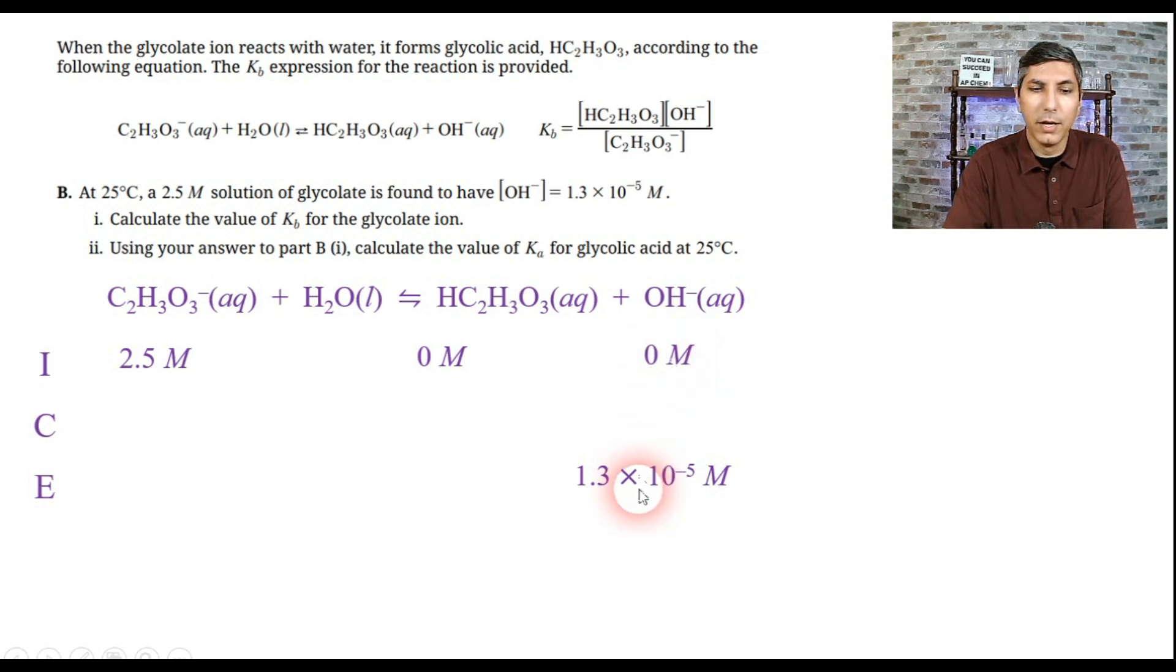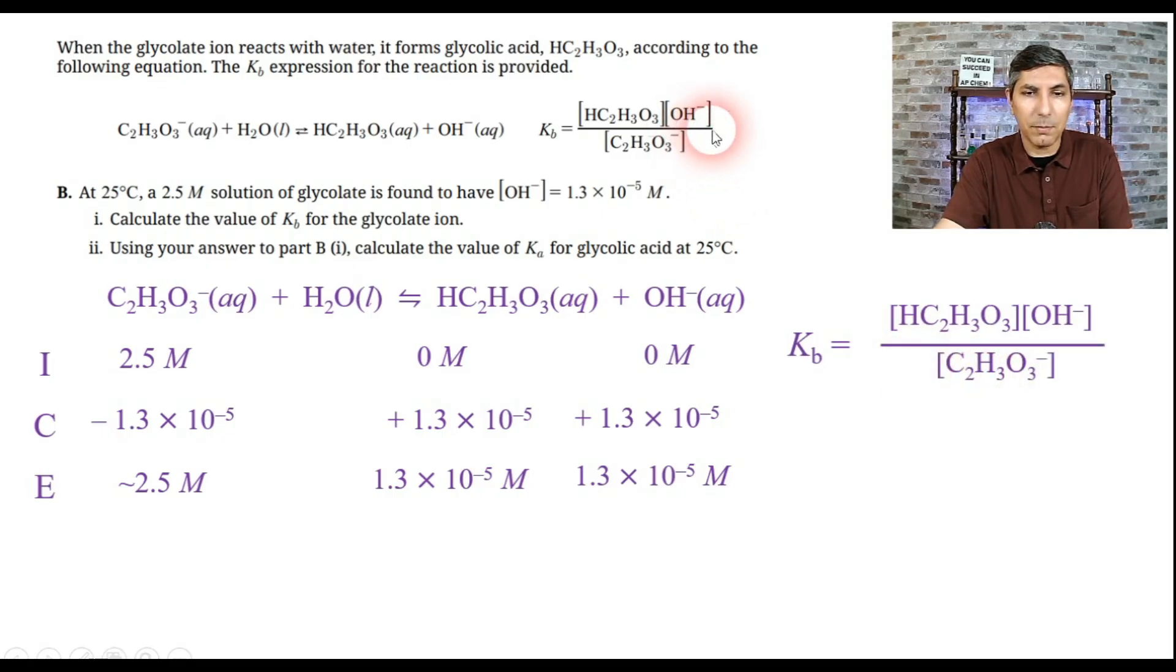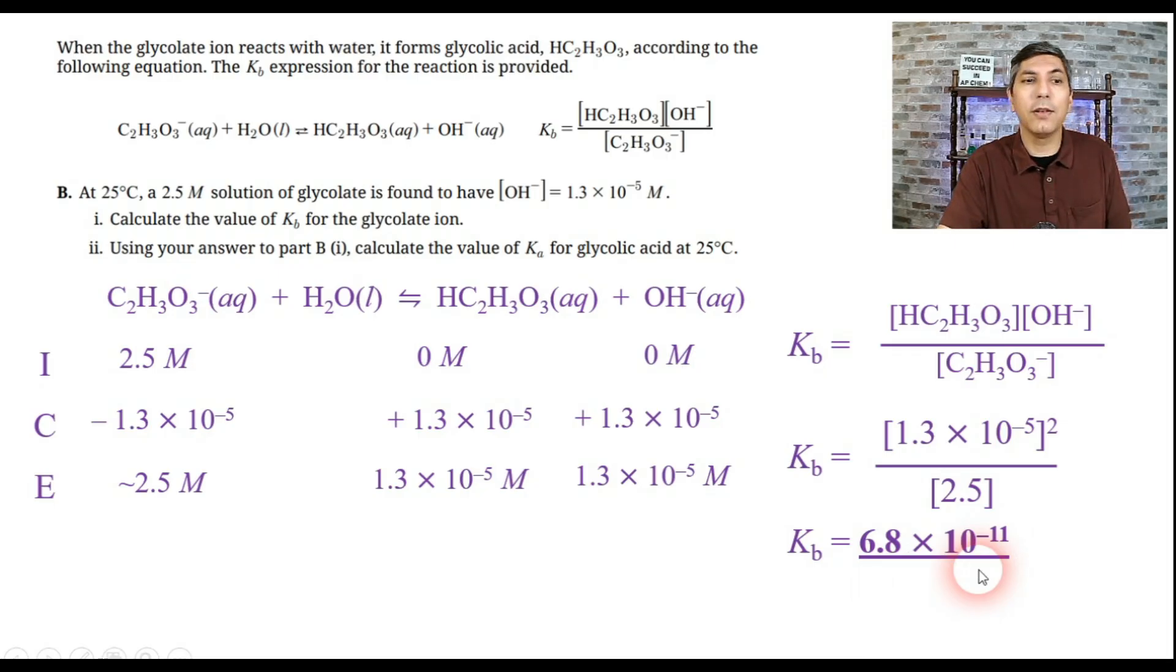We know that at equilibrium, the hydroxide ion concentration is 1.3 times 10 to the negative fifth, so that goes into the equilibrium position for hydroxide. The change of hydroxide from zero to 1.3 times 10 to the negative fifth is positive 1.3 times 10 to the negative fifth. Since hydroxide and glycolic acid are in a 1 to 1 ratio, the increase of glycolic acid will also be plus 1.3 times 10 to the negative fifth. The change of the glycolate ion will be negative 1.3 times 10 to the negative fifth, and that's approximately still about 2.5. I'm going to take these equilibrium values and plug them into the KB expression. We find that the value of KB is 6.8 times 10 to the negative 11. Give yourself a point if you did all that work and got the right answer.